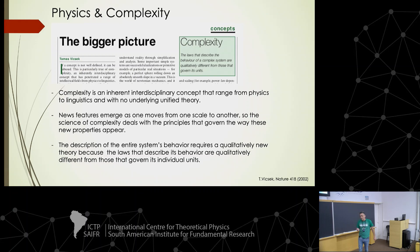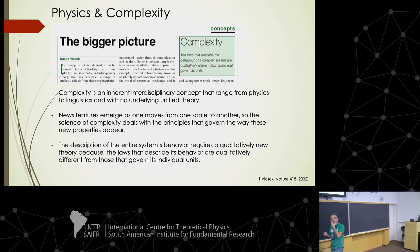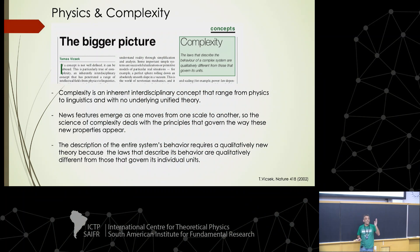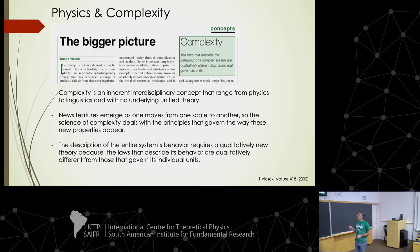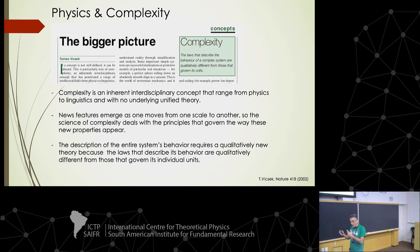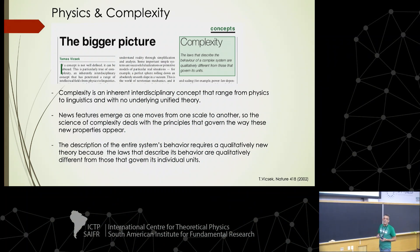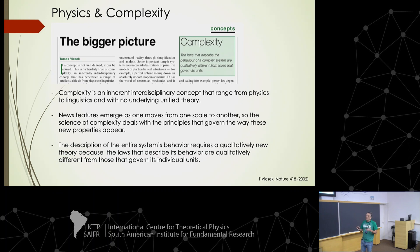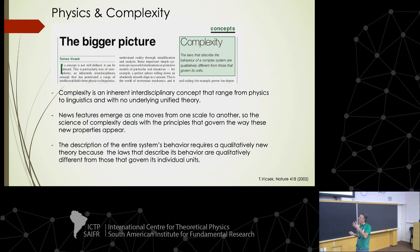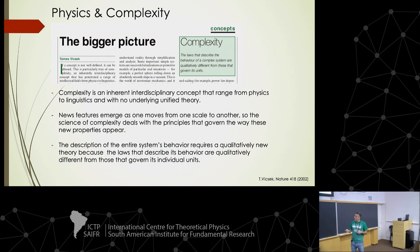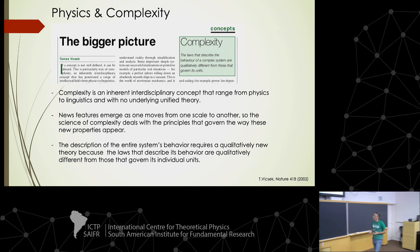Even though we know the standard model and all the properties of particles, the interaction and aggregates of different levels just create new physics, and this new physics is as fundamental as previous physics. Also, Thomas Vicsek was one of the first to propose a model of flocking. He also published a comment in Nature making his statement about complexity — that complexity is an inherently interdisciplinary concept ranging from physics to linguistics, sociology, and other disciplines.